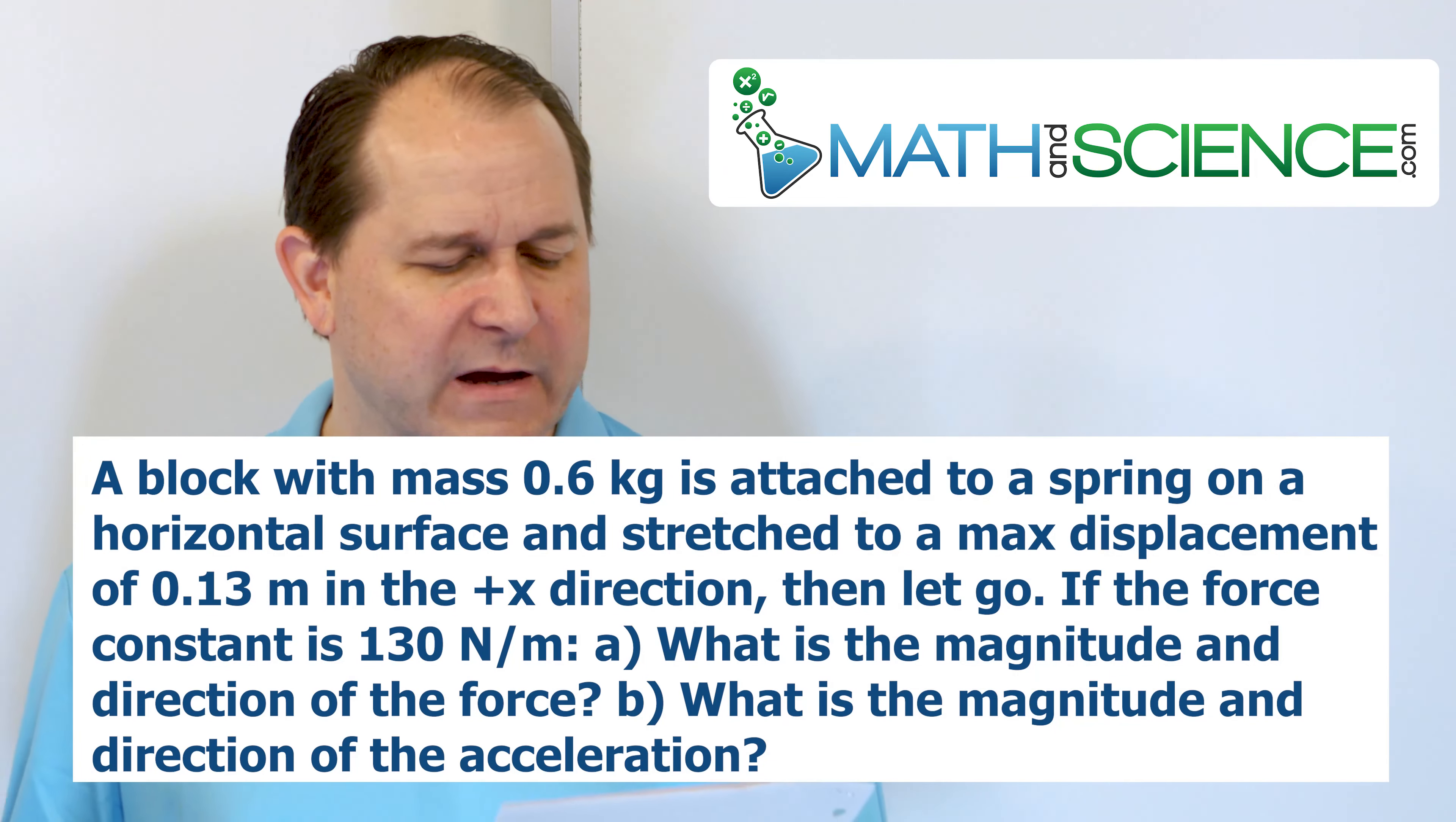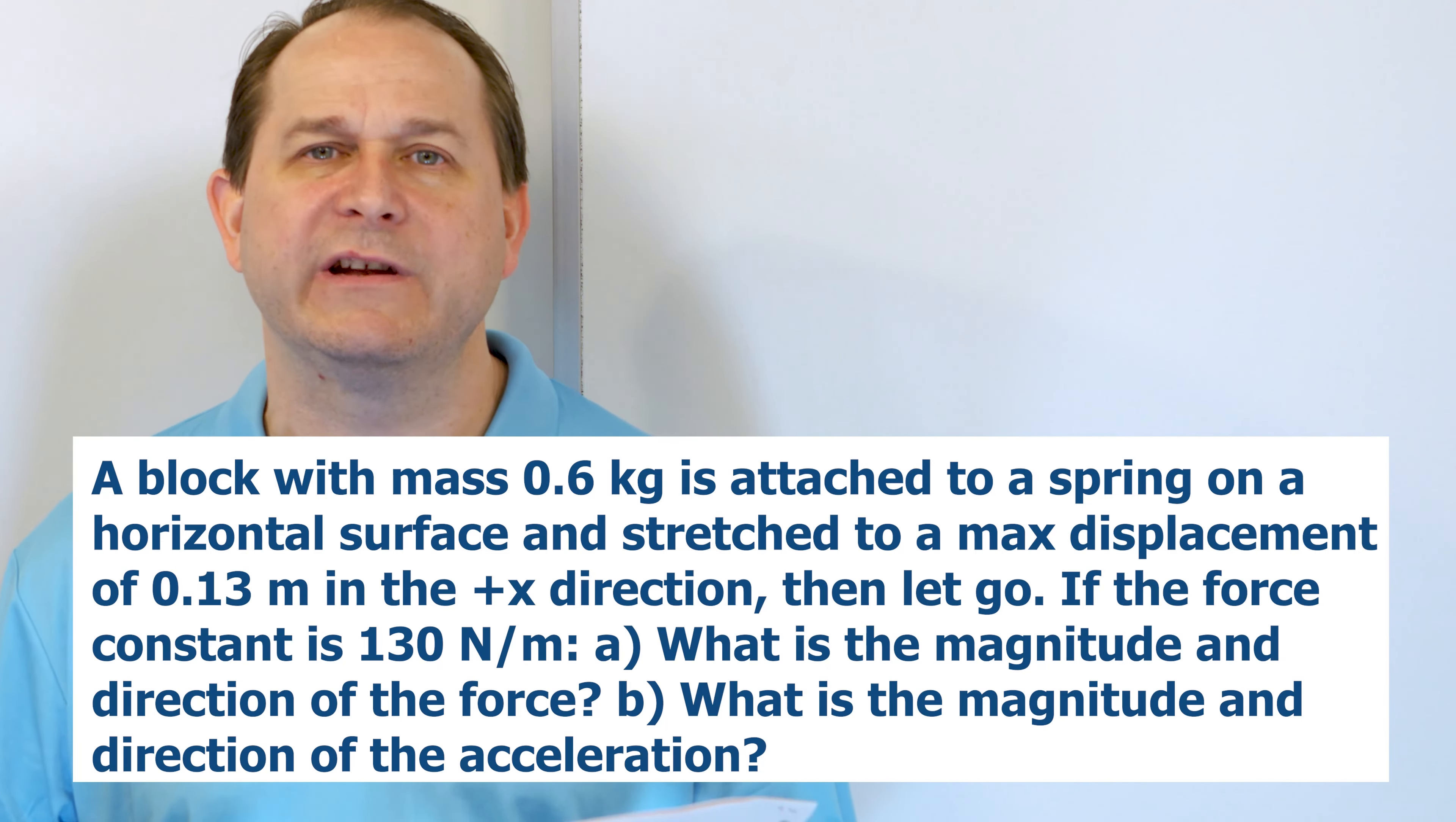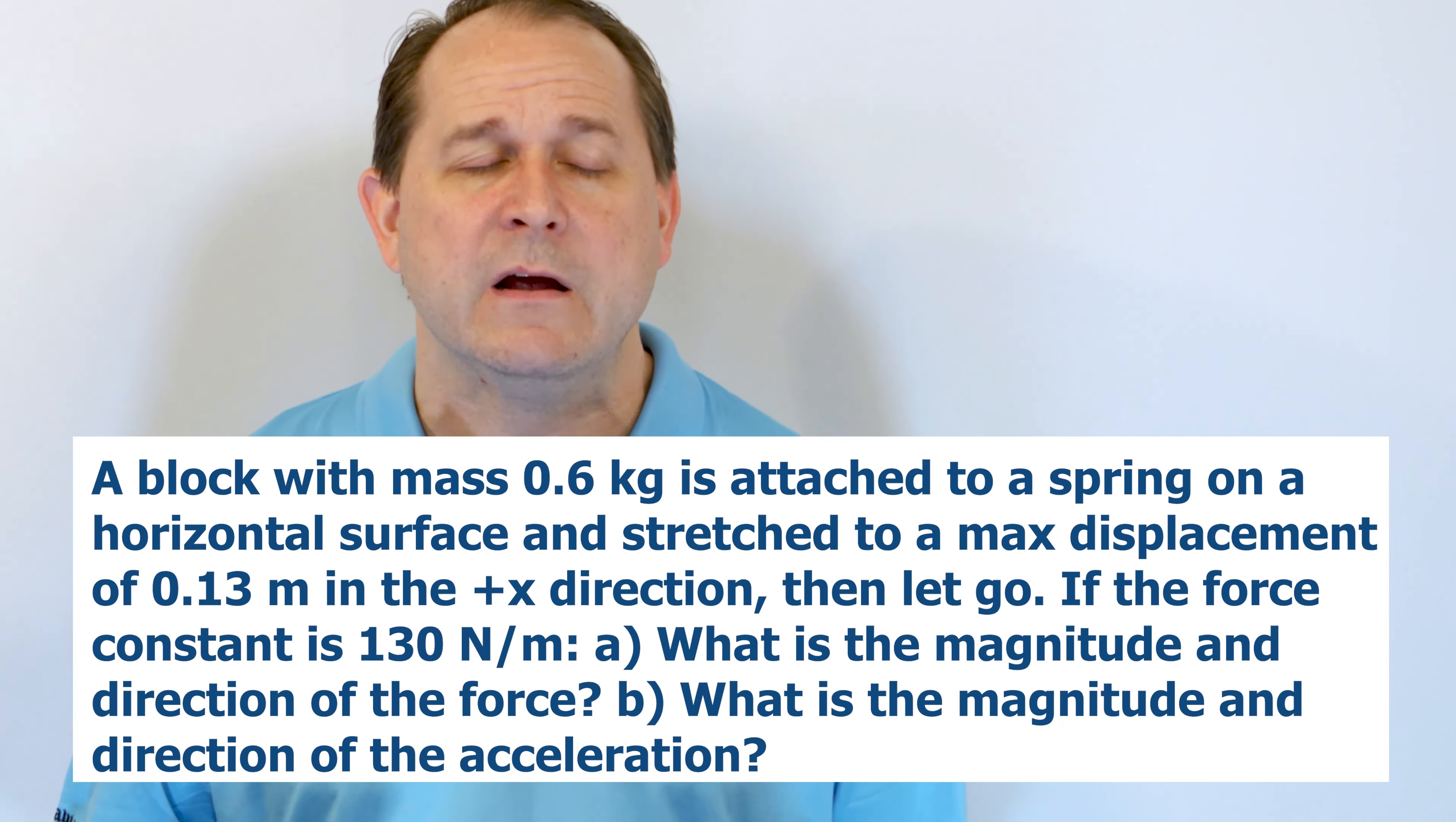Here's the problem. A block of mass 0.600 kilograms is attached to a spring along a horizontal surface and stretched to a maximum displacement, delta x, of 0.130 meters in the positive x direction and let go. If the force constant of the spring K is 130 newtons per meter and we can ignore the effects of friction, we have two questions. The first one, what is the magnitude and direction of the force applied to the block? This means the force applied by the spring to the block. And B, what is the magnitude and direction of the acceleration of the block?